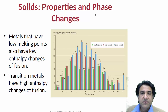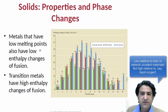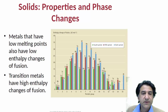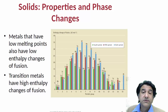Let's look at a few of the melting points and heats of fusion of certain substances. Metals generally have low melting points. For example, look at rubidium and mercury at the ends of the periodic table — they have very low melting temperatures, and mercury is already liquid at normal temperature. Generally speaking, metals that have low melting points also have low enthalpy changes of fusion. If they have low melting points, the intermolecular forces are relatively weak, so in order to break those forces, you don't need much energy to supply, and that makes sense.